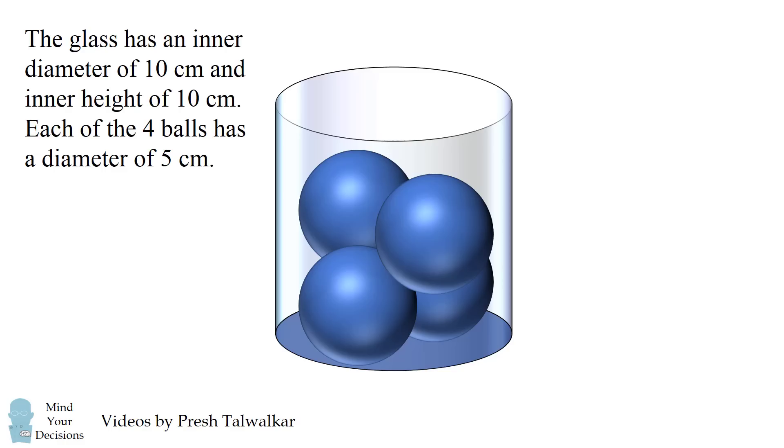The glass has an inner diameter of 10 centimeters and an inner height of 10 centimeters. Each of the four balls has a diameter of 5 centimeters. How much water do you need to exactly cover to the top of the balls?